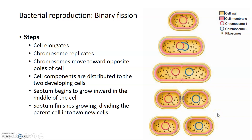In most cases, the daughter cells that result from binary fission are completely physically separated from each other. However, there are some cases where that separation is not complete, and the daughter cells remain arranged in chains or doublets because the physical division doesn't fully finish.